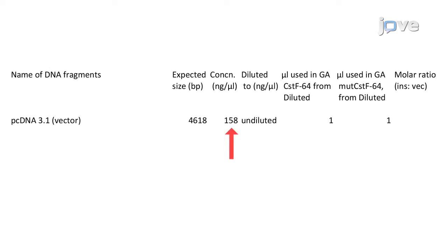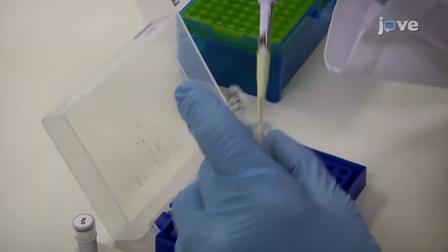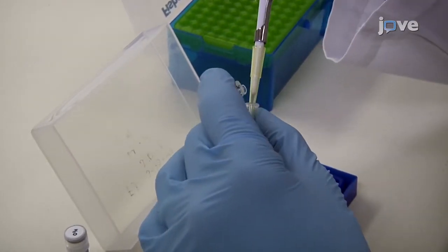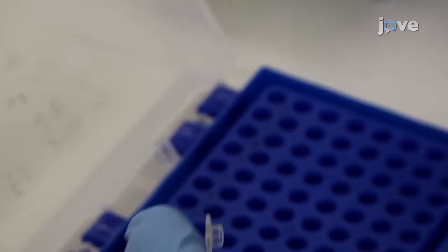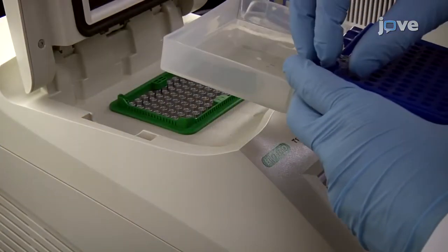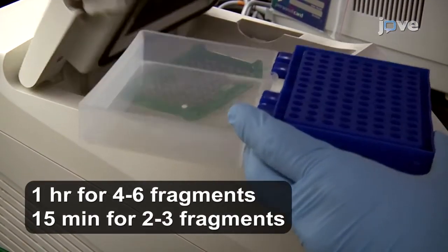Use at least 100 nanograms of DNA fragment representing the vector backbone or DNA fragment carrying the selective marker. Calculate the 3-fold molar excess for the DNA fragments that will be used as inserts. Mix the calculated amounts of DNA fragments in a PCR tube. Then, adjust the volume to 10 microliters. Add 10 microliters of the Gibson Assembly Master Mix. Incubate the reaction at 50 degrees Celsius in a PCR thermal cycler.